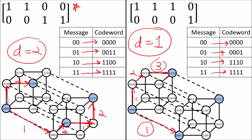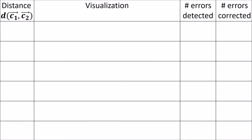So why do we care about the minimum distance? The minimum distance of a code tells us how many error bits we are guaranteed to be able to fix. If the distance between valid code words is one, then we can't detect or correct any errors, because an error will move us from one valid code word to another valid code word and we can't tell a mistake has happened.